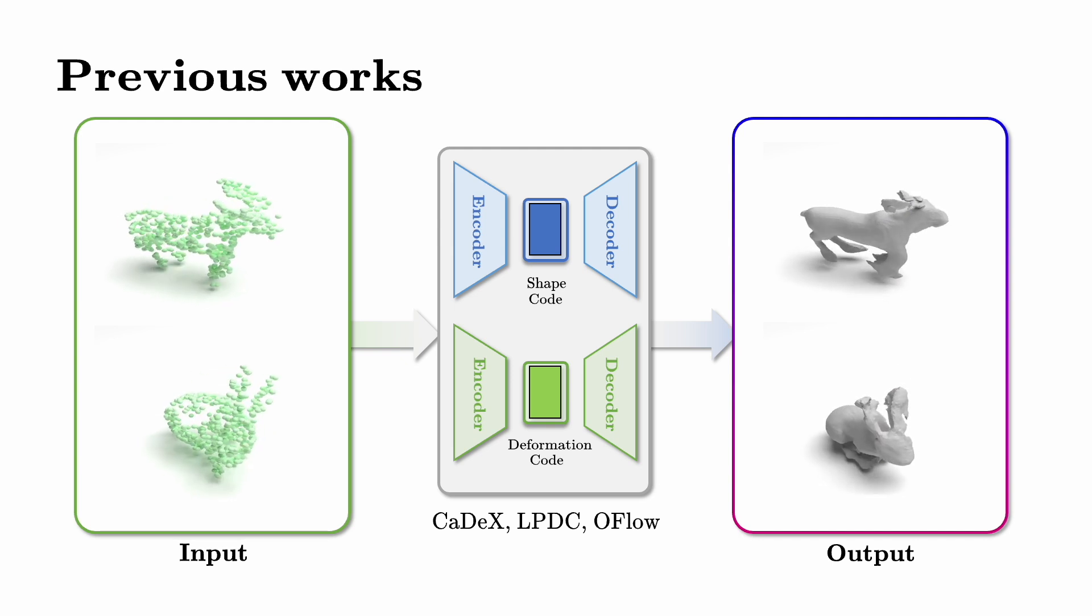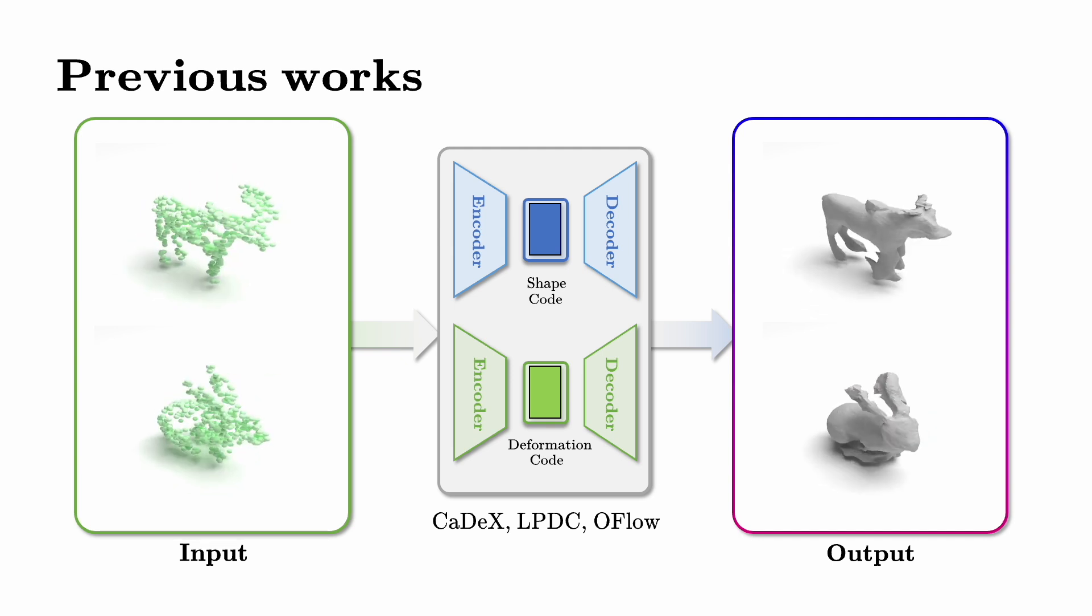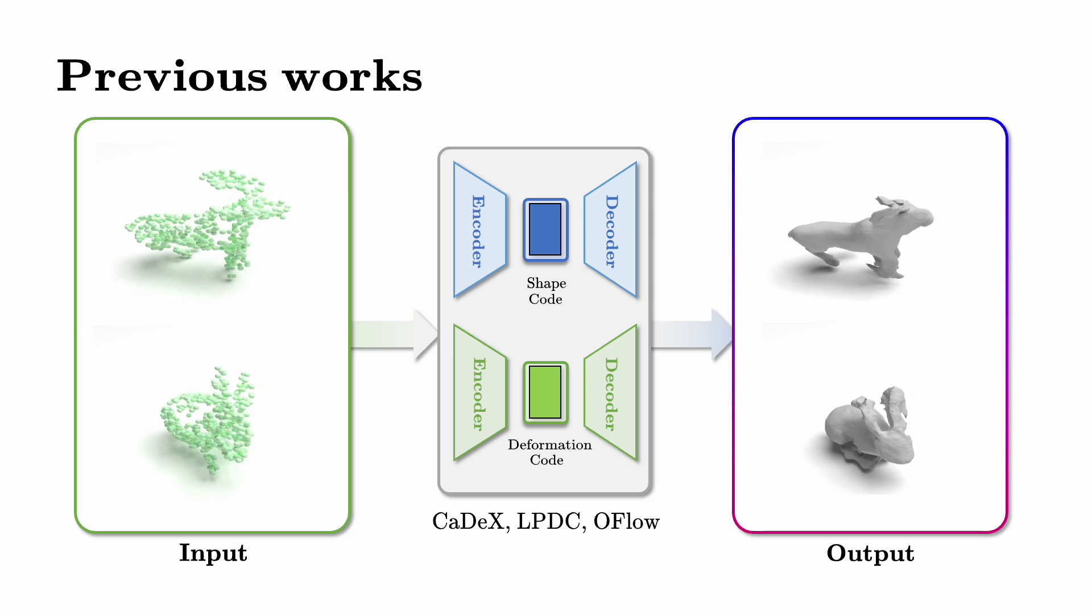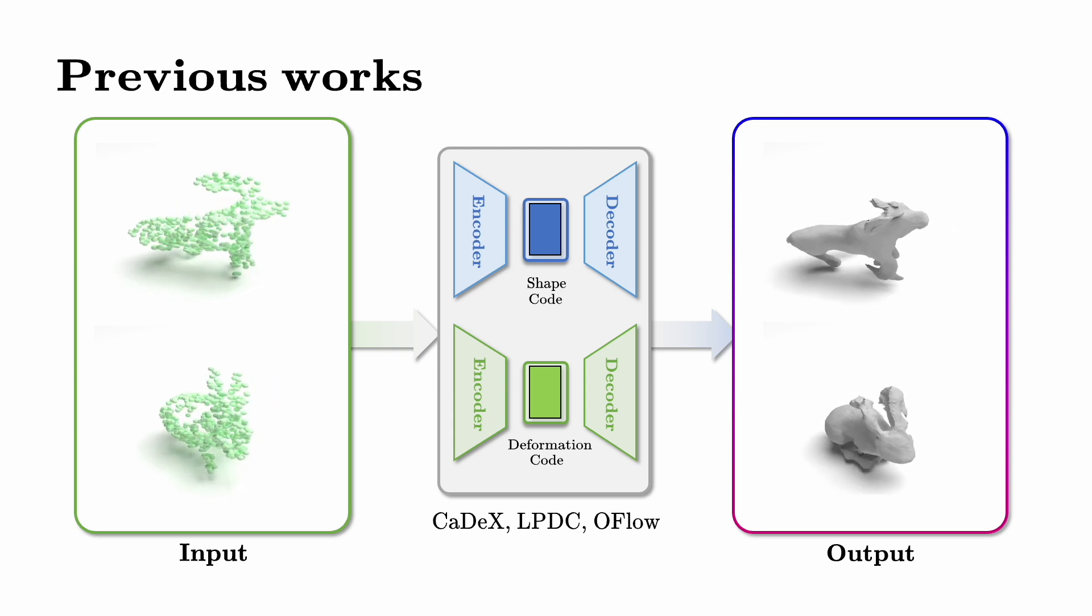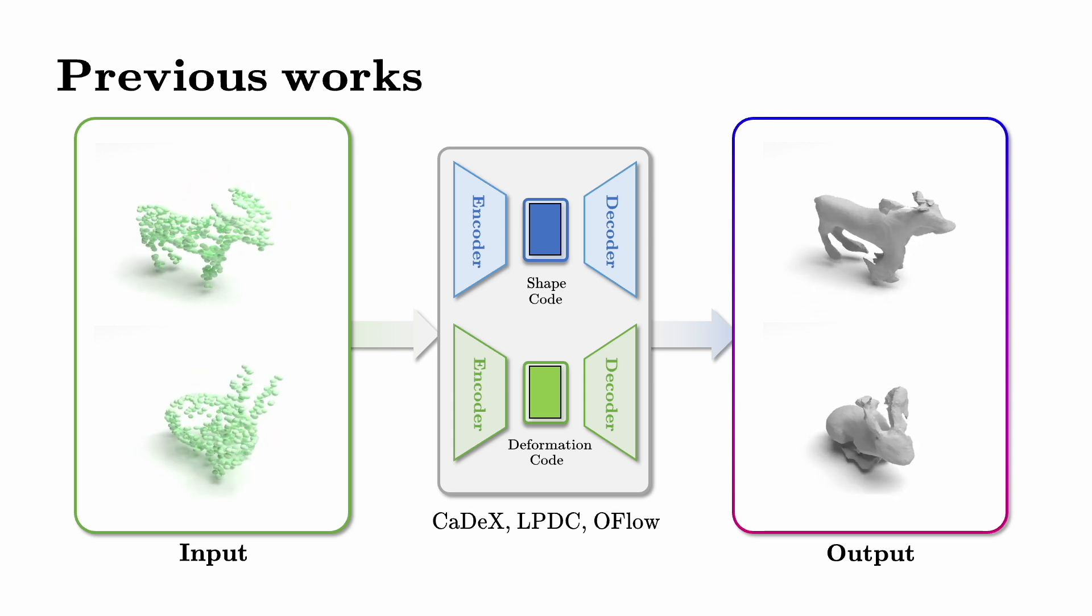Current state-of-the-art methods rely on conventional feed-forward networks, which struggle with sparse, noisy, and partial observations. They represent dynamics using sequences of single latent code, limiting their ability to accurately capture shapes and motions, and to generalize to unseen identities.